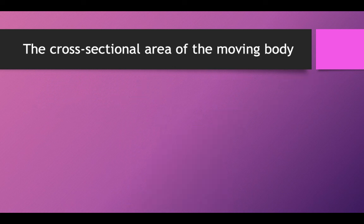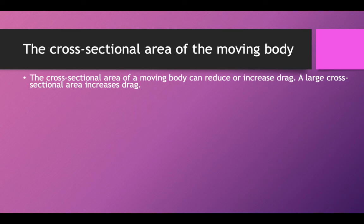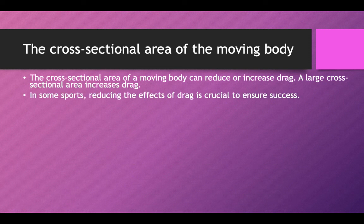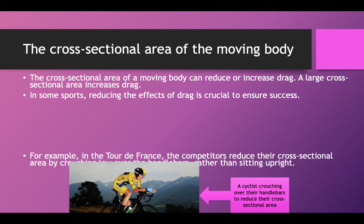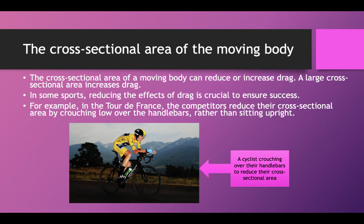The cross-sectional area of the moving body can reduce or increase the drag. A larger cross-sectional area increases drag. In some sports, reducing the effect of drag is crucial to ensure success. For example, in the Tour de France, the competitors reduce their cross-sectional area by crouching lower over the handlebars rather than sitting upright, as you can see here.